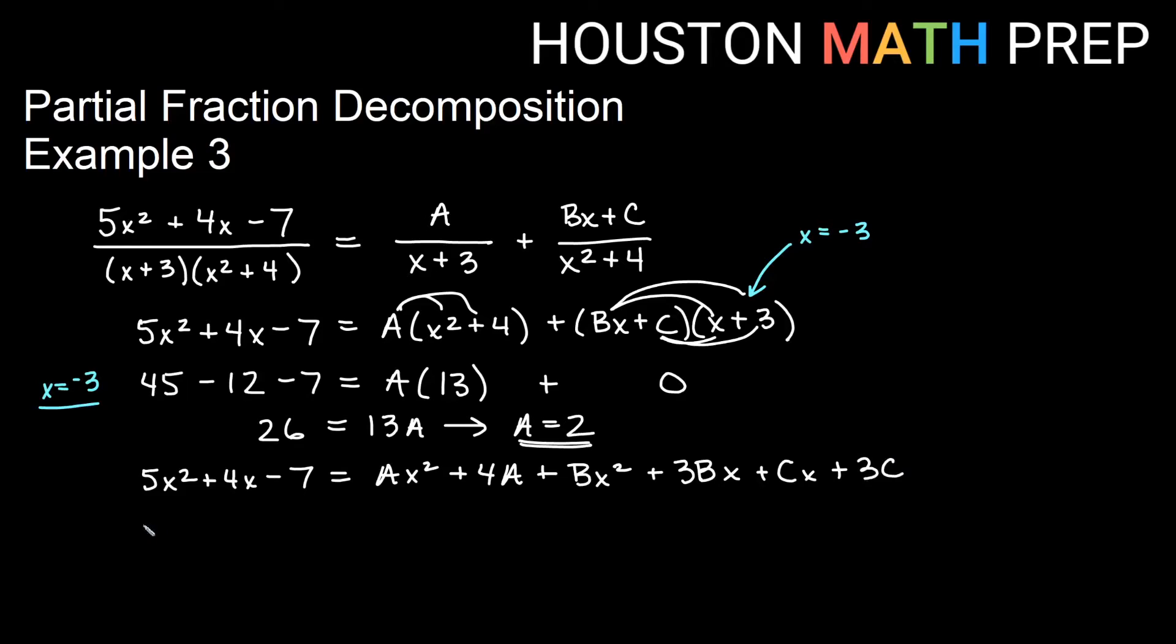We now combine like terms on the right side and then we just compare across the equal sign. So 5x squared plus 4x minus 7 stays. If I combine all my x squared terms I look through, here's an x squared term, here's another x squared term. How many x squareds do I have? A plus B is how many I have on the right side.